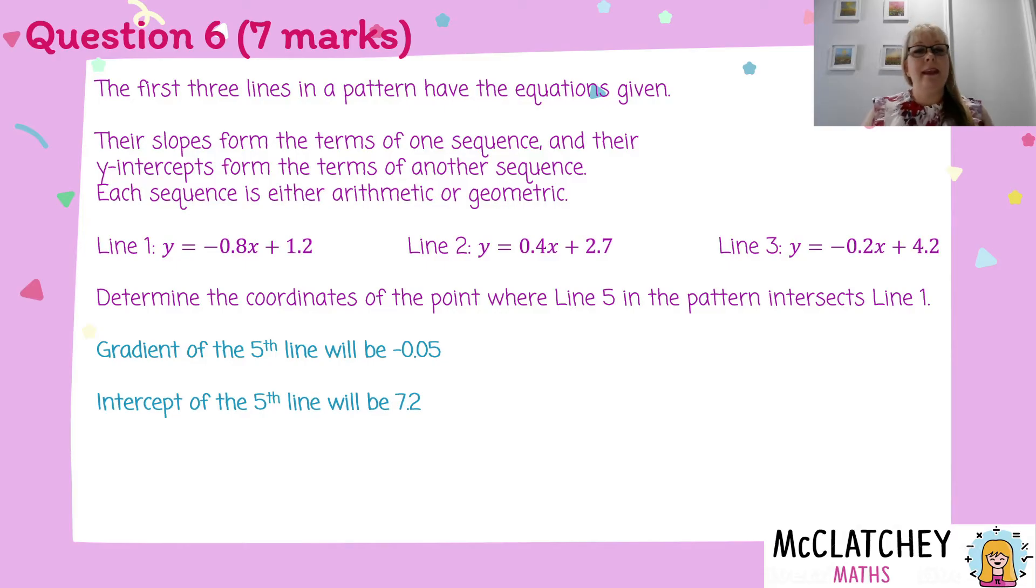There's a lot of marks in this question. So I've got the gradient, negative 0.05, the intercept, 7.2. Let's put that into y equals mx plus c. And we get y equals negative 0.05x plus 7.2. I've now got an equation for line 5.